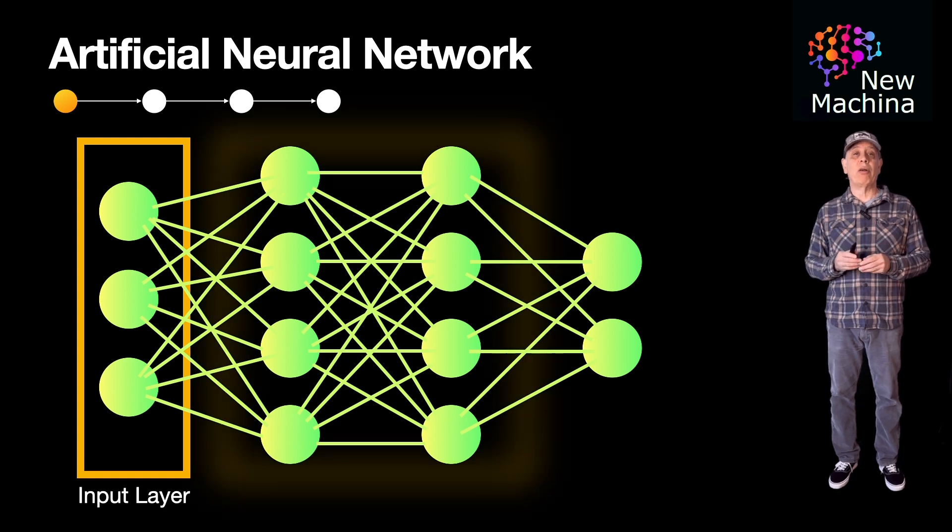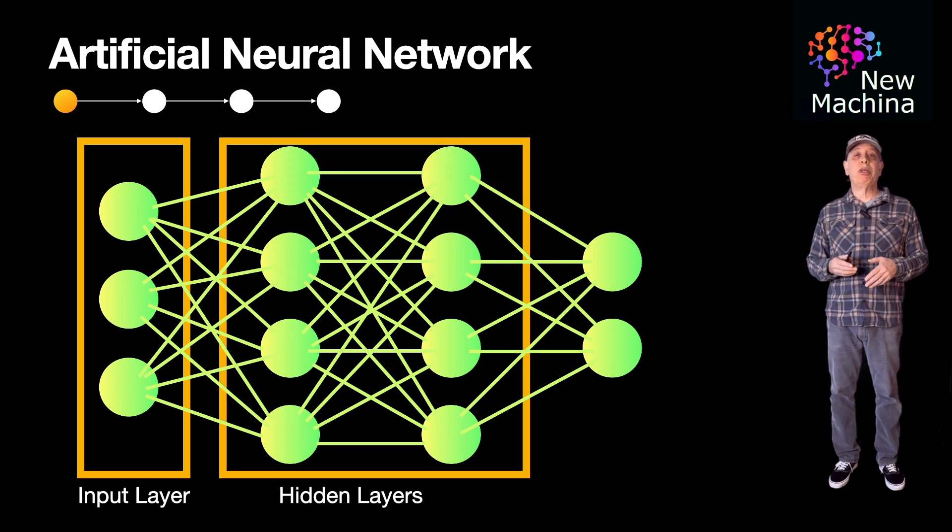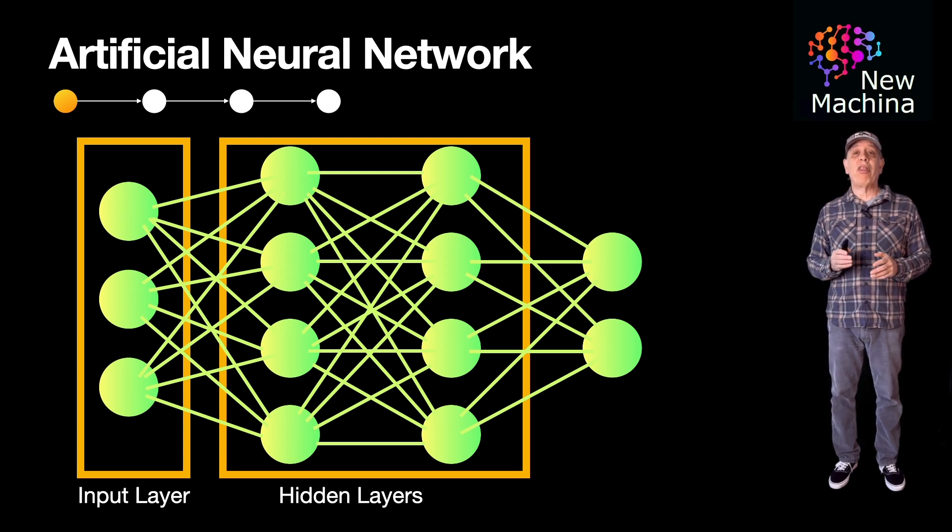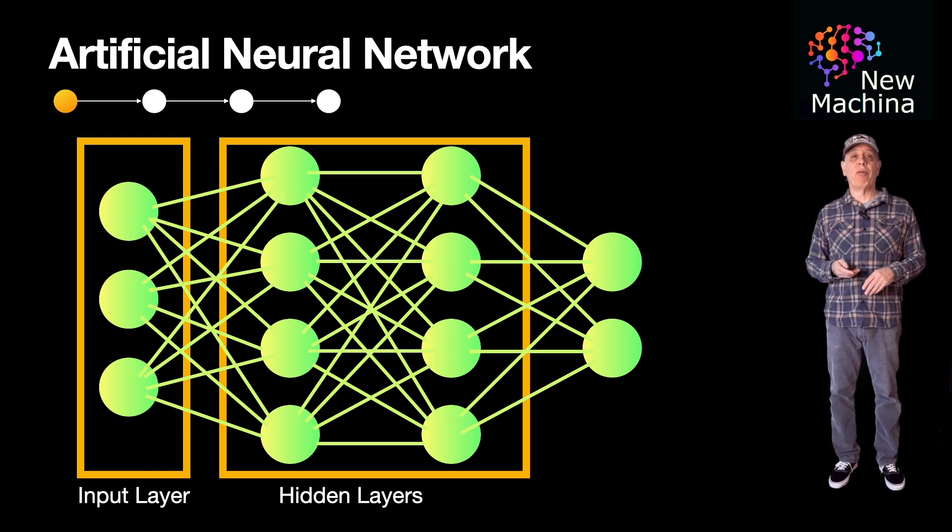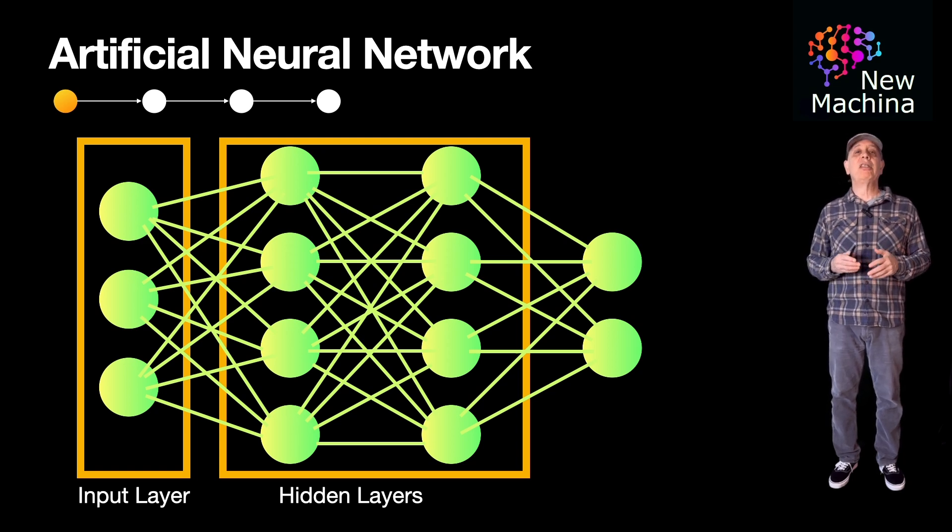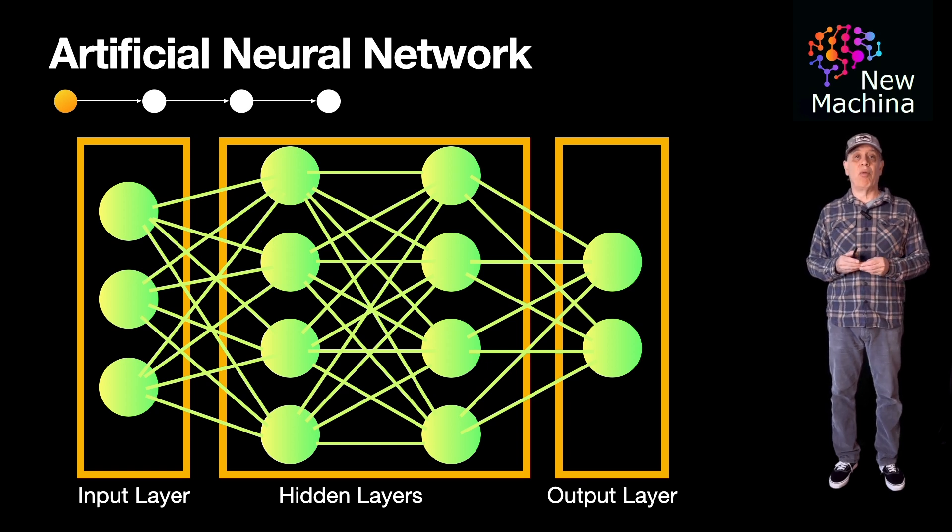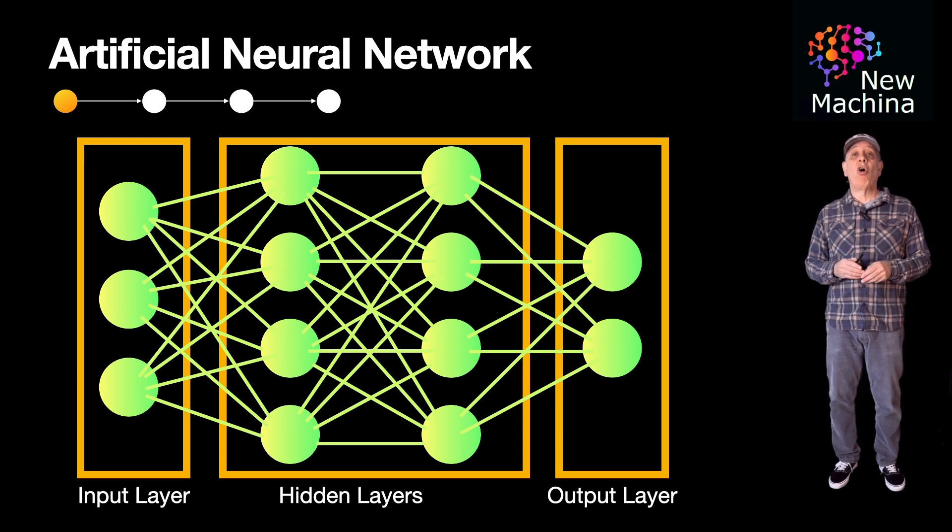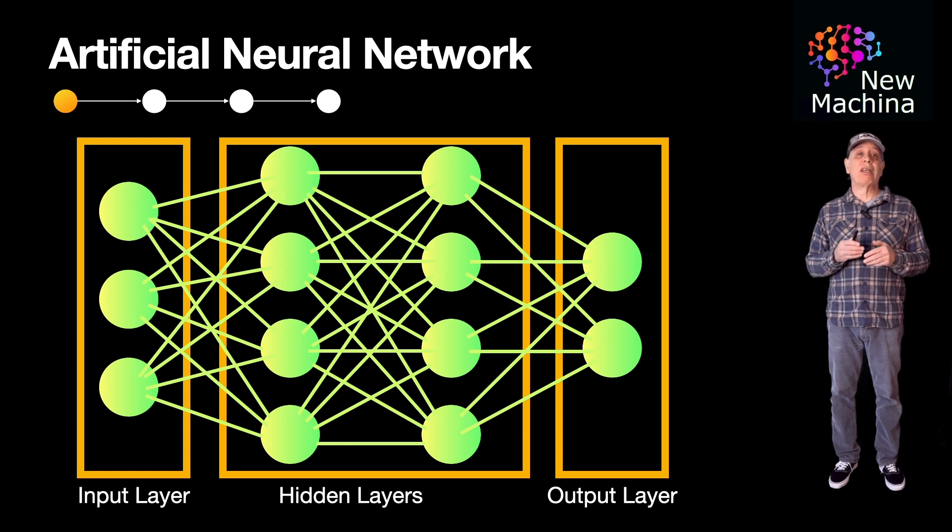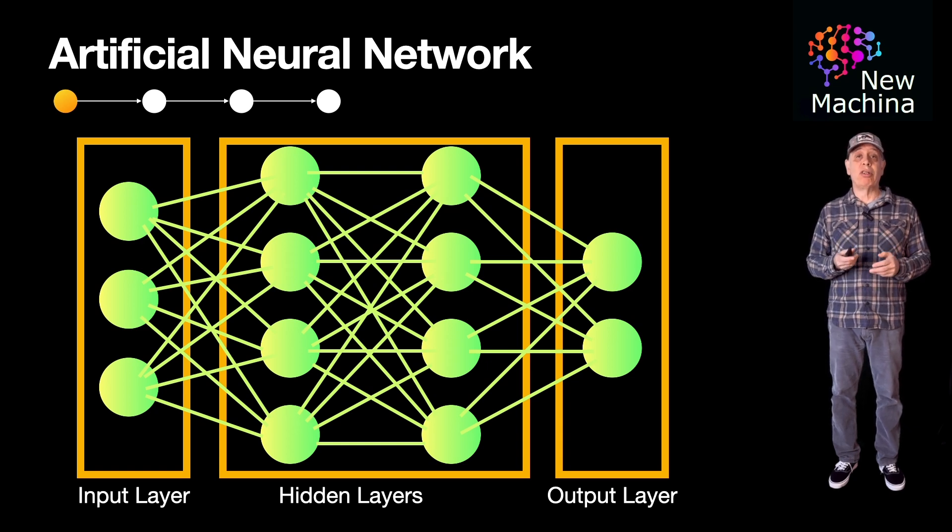Here you see two hidden layers. These are the layers between the input and the output layers. The hidden layers consist of neurons that perform computations and pass the results to the next layer. Lastly, you see the output layer. The output layer produces the final prediction or decision of the network. The number of neurons in the output layer depends on the type of task. A single neuron for a binary classification or multiple neurons for multi-class classification or regression tasks.